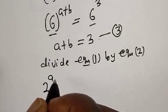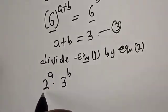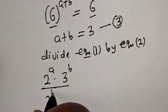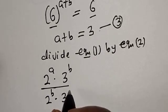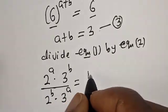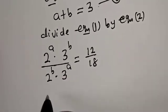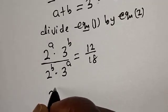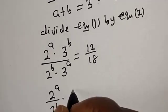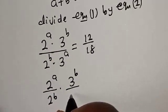Also, let's divide equation 1 by equation 2. We have 2 to the power A multiplied by 3 to the power B divided by 2 to the power B multiplied by 3 to the power A, is equal to 12 divided by 18. Let's split this: we have 2 to the power A divided by 2 to the power B, multiplied by 3 to the power B divided by 3 to the power A.